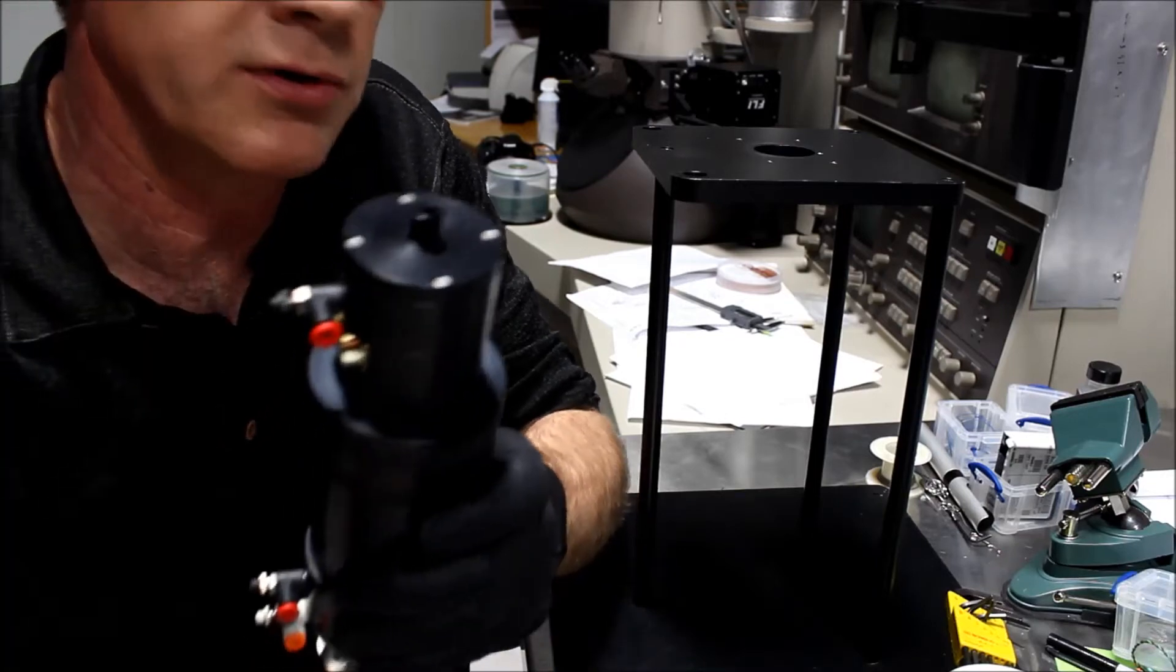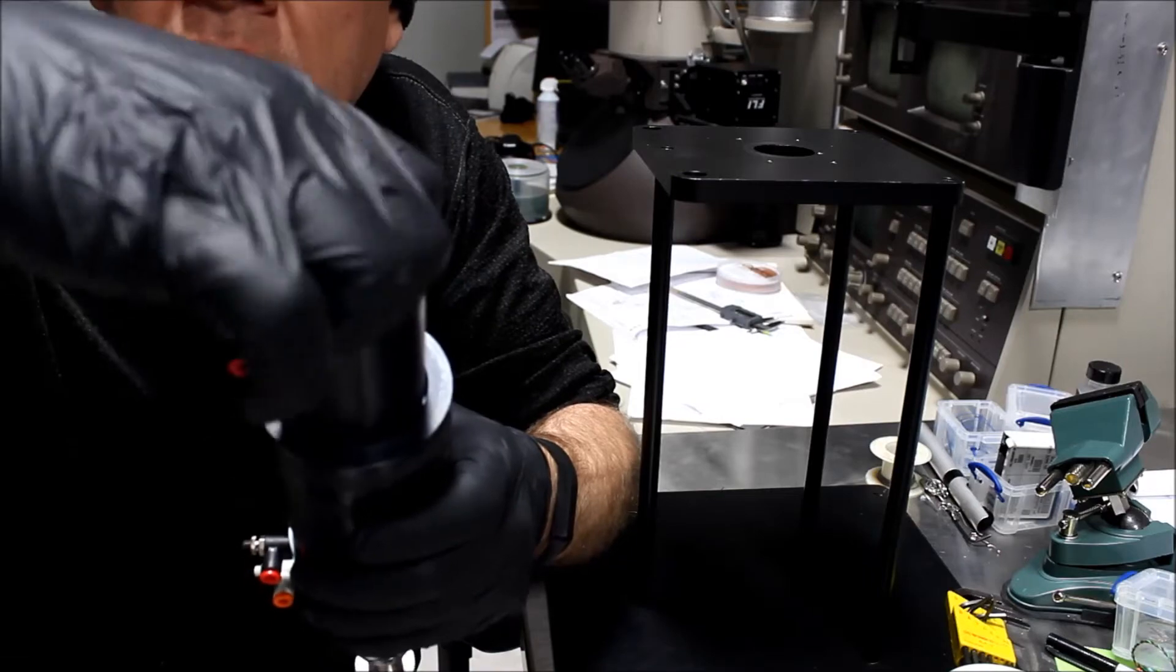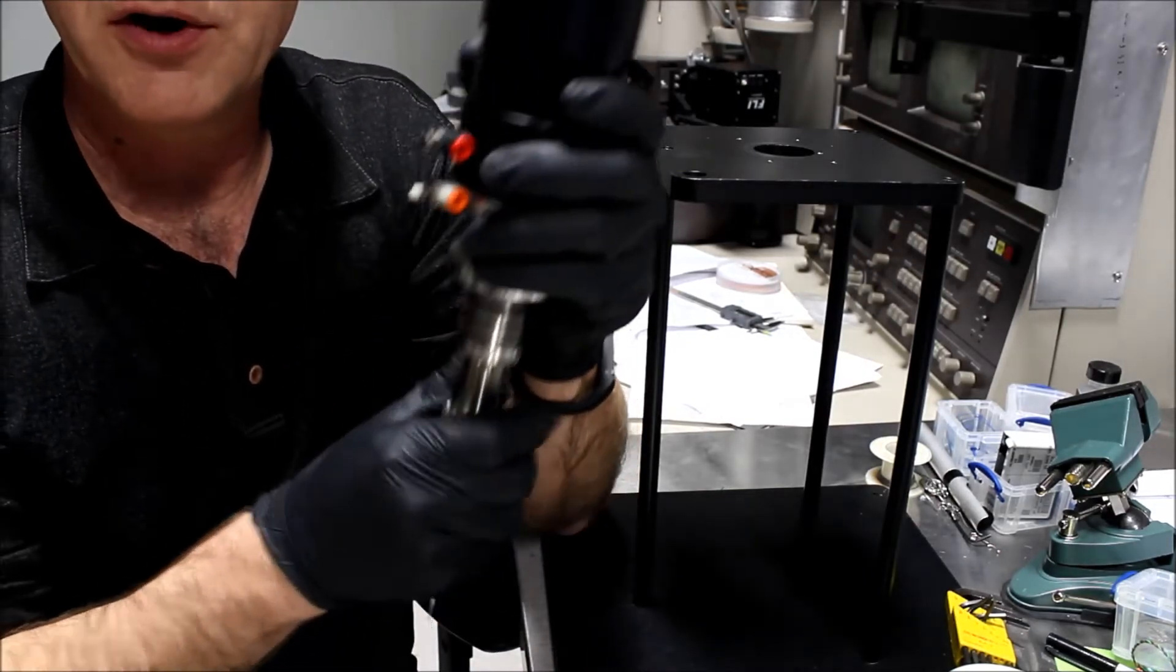Once the set screw is loose, we can tighten the little thumb screw, turn it clockwise, and we can turn that until we feel the force increase, and then we know I've turned it far enough.